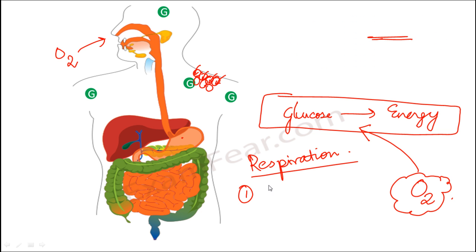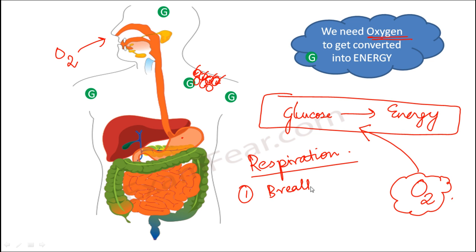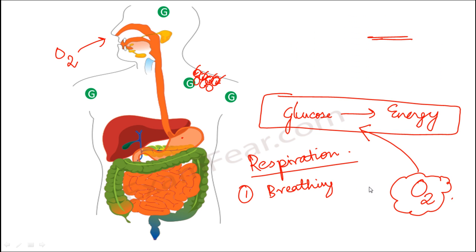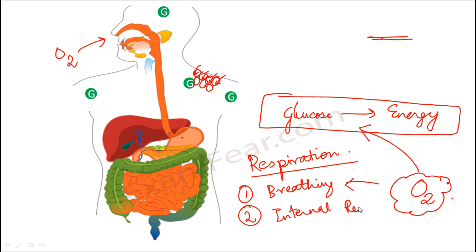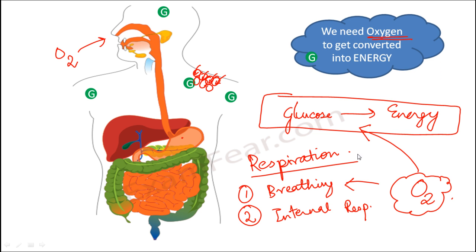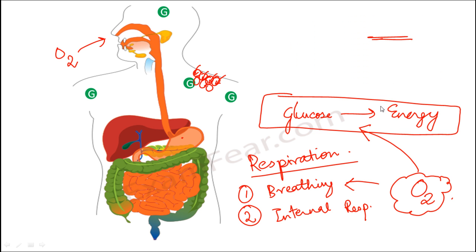This process is known as respiration. Respiration is not only about breathing — breathing is one part of respiration, where the intake of oxygen happens. The other part is what we call internal respiration, where the oxygen that has been breathed in is utilized by the cell for oxidation of glucose to produce energy. These two things — breathing and internal respiration — together make the entire process of respiration.